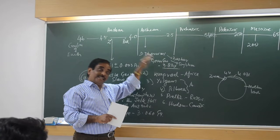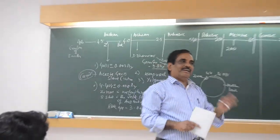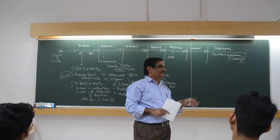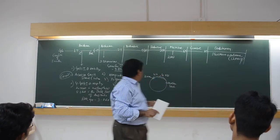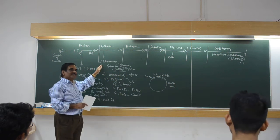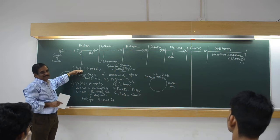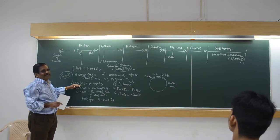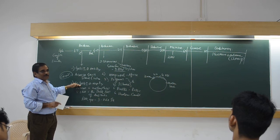But these older rocks have been destroyed — they have been destroyed, because whatever rocks have been formed they have been destroyed. Only vestiges at 4.03 — there is still material at 4.4. Follow this point.